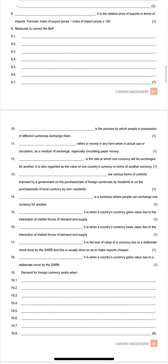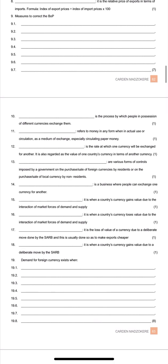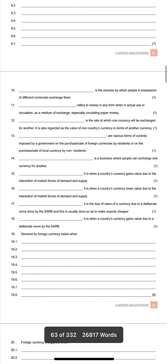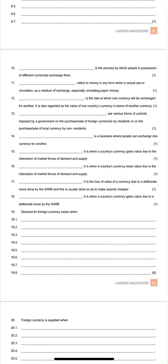Then measures to correct BOP disequilibria — that's when the BOP doesn't balance. You need to know a couple of ways in which countries make corrections to BOP disequilibria, meaning a deficit or a surplus. A deficit is less preferable.